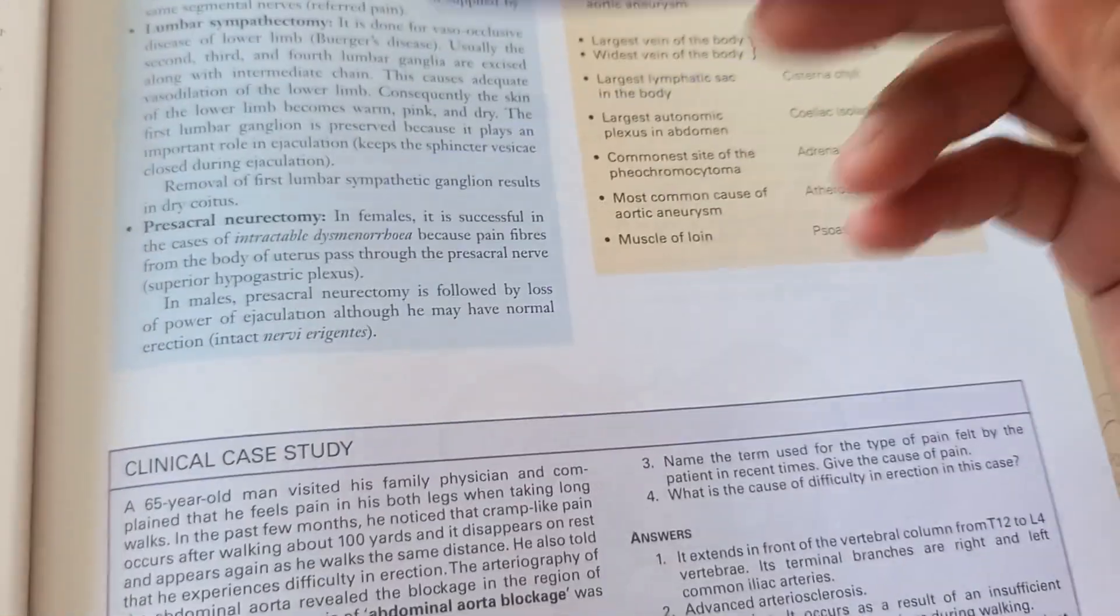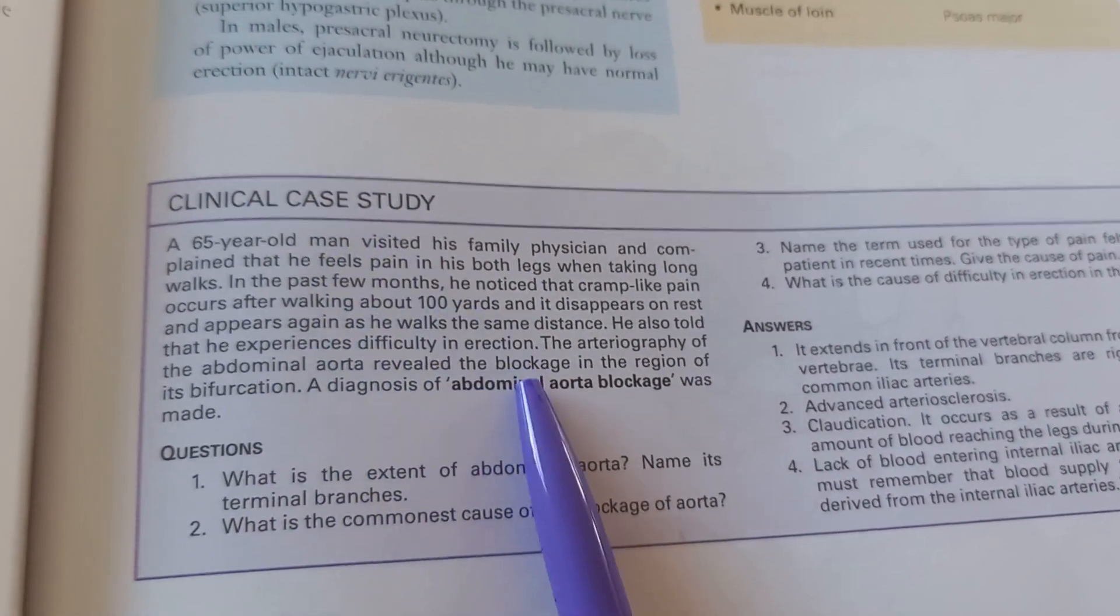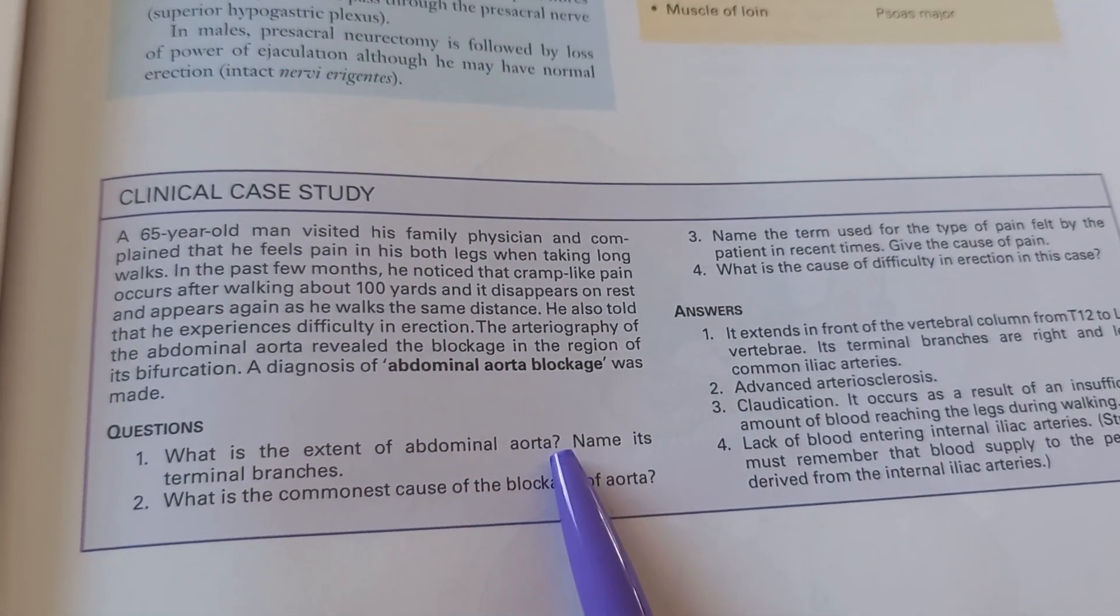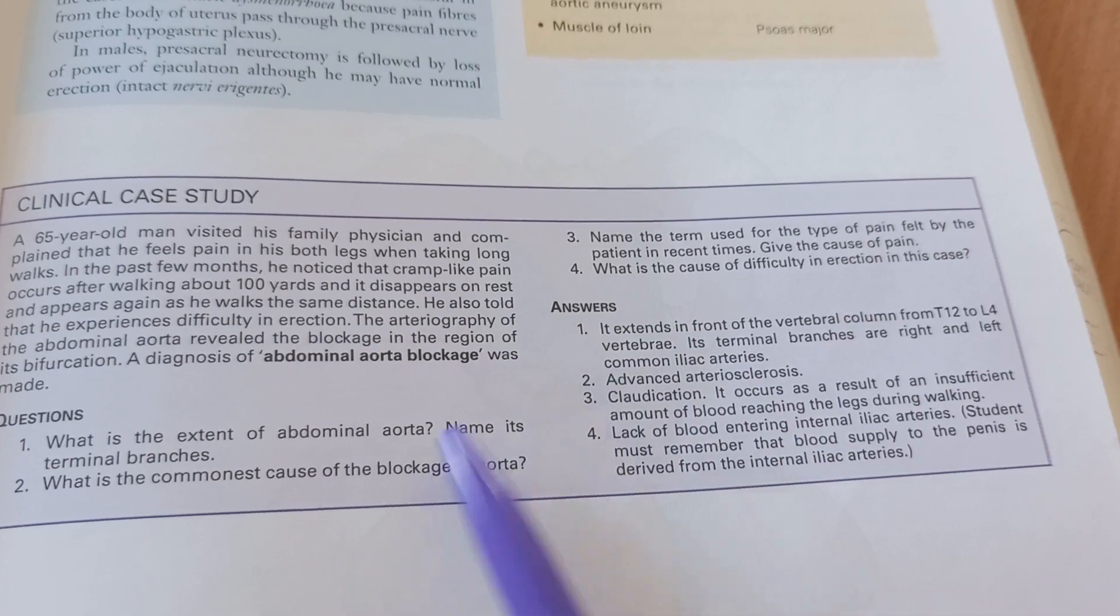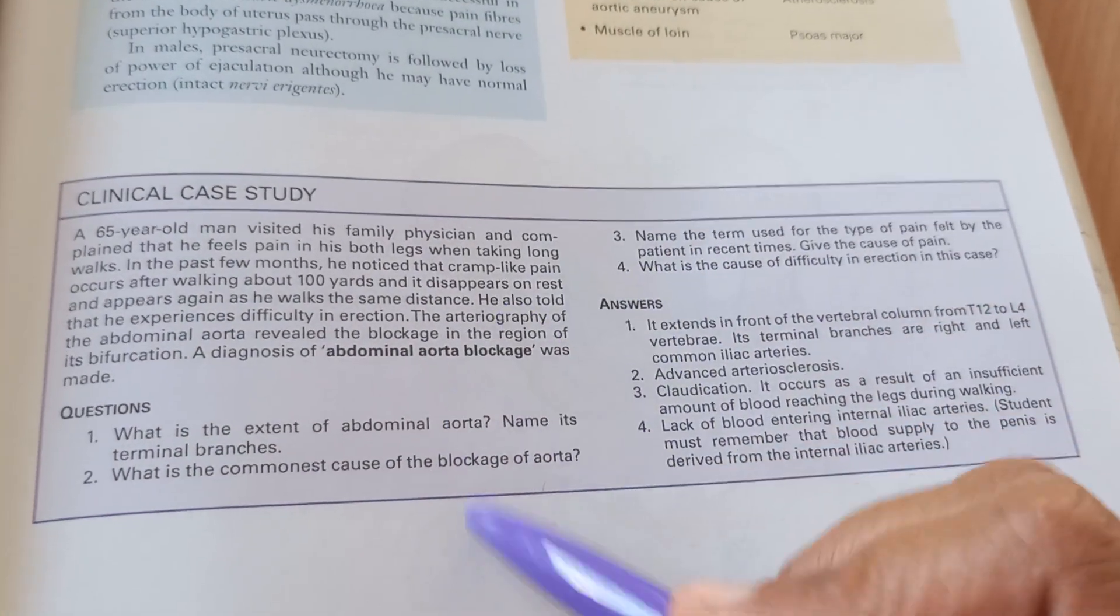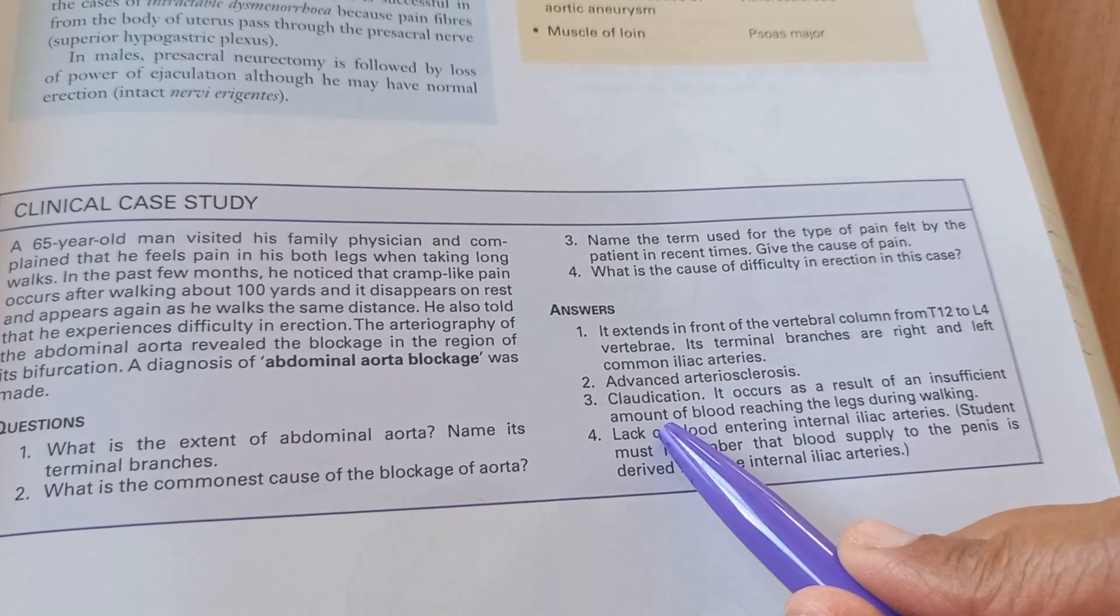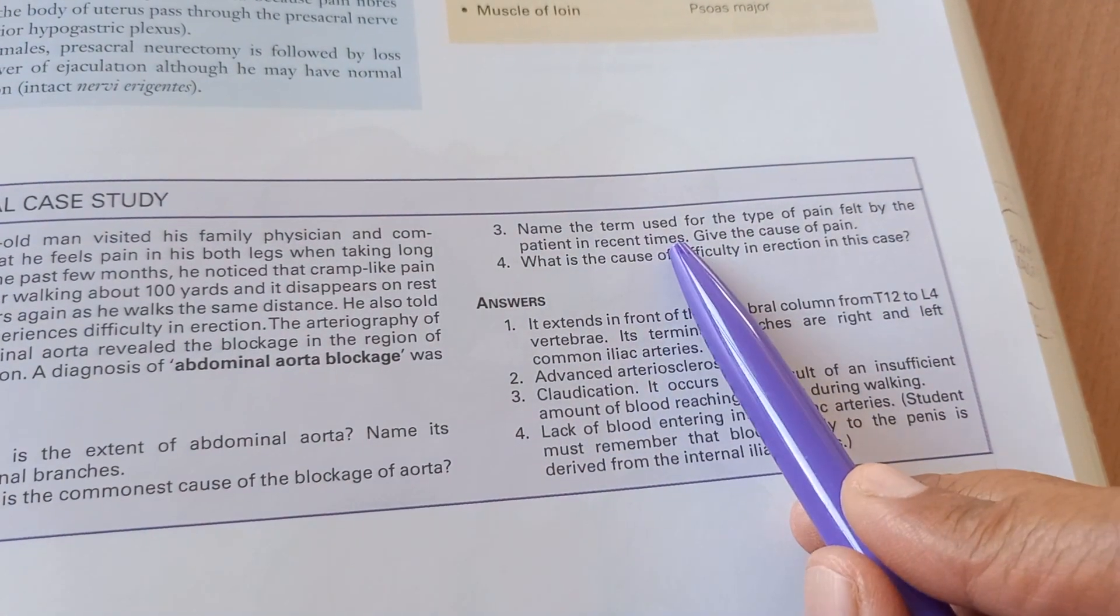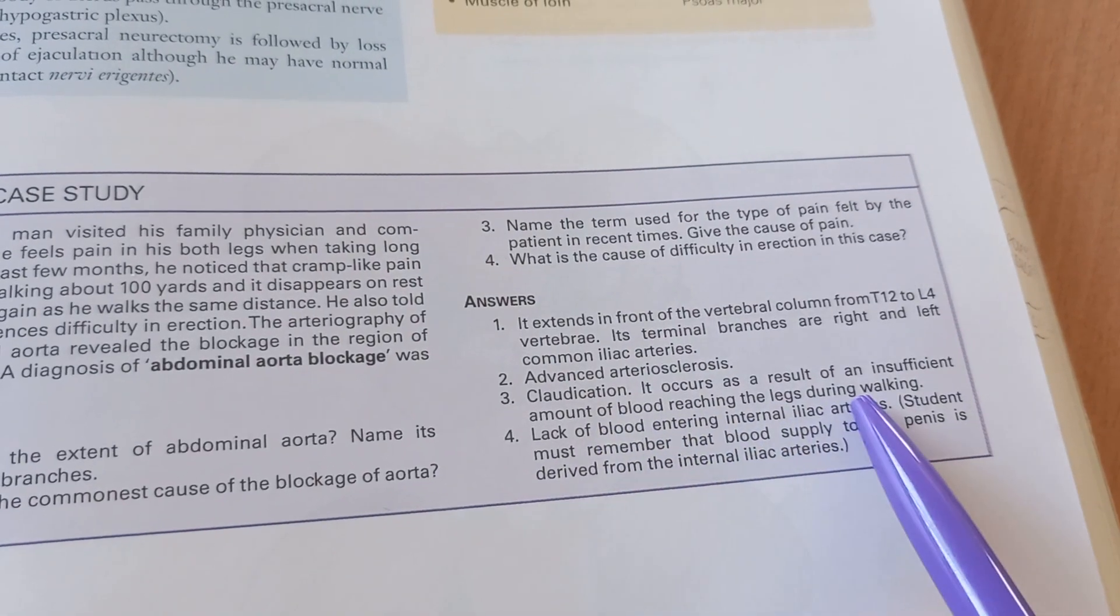At the end of every chapter, what have they given? Similar. Clinical correlation. Golden facts to know clinical case study. Let's look at a clinical case study. Abdominal aorta blockage was made. So they know the diagnosis after all this. What is the extent of abdominal aorta? So this is anatomy that they are asking. It extends in the front of the vertebral column from T12 to L4. So that is the abdominal part of the aorta. So you know the aorta, it comes out from the heart. What is the commonest cause of the blockage of the aorta? So here they didn't ask about the blockage of the abdominal aorta. In general of the aorta itself, they are asking. So that is because of arteriosclerosis advanced. Then name the term for the type of pain felt by the patient in recent times by this patient. Give the cause of the pain. Let's look at the answer. Claudication. It occurs as a result of insufficient amount of blood reaching the legs during walking. So that is claudication. That much for now. If you have learned enough, claudication.